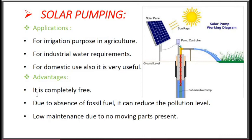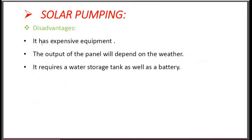Advantages of solar pumping system: It is completely free of cost. Due to absence of fossil fuel, it reduces pollution level — there is no emission of carbon, nitrogen oxide, SO2, etc., reducing the greenhouse effect. Low maintenance due to no moving parts. Disadvantages: It has expensive equipment. The price of the induction machine is high, the pump set is high cost, the piping system for the submersible setup is also high, and the cost of making a borewell is very high, so the system requires more expense for implementation.